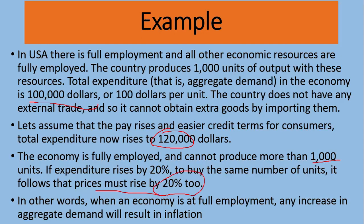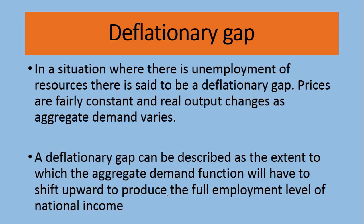If expenditure rises by 20 percent, prices also have to rise by 20 percent. This is called the inflationary gap — a gap between aggregate demand and aggregate supply which ultimately causes a rise in the price. In other words, when the economy is at full employment, any increase in aggregate demand will result in inflation.